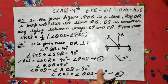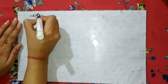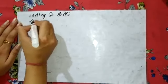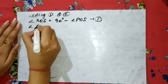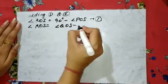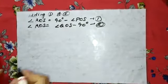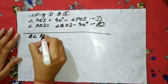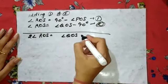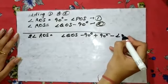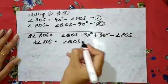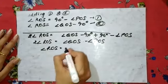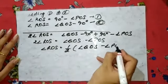Now add the first and second equations. First equation: angle ROS = 90° − angle POS. Second equation: angle ROS = angle QOS − 90°. Adding both sides: 2 × angle ROS = angle QOS − angle POS. Therefore, angle ROS = ½(angle QOS − angle POS). Hence proved.